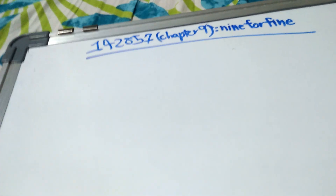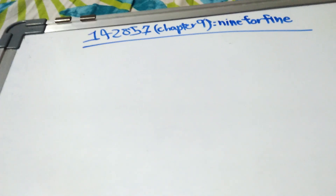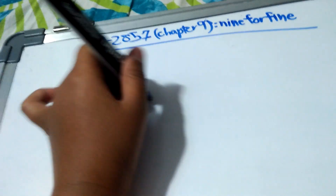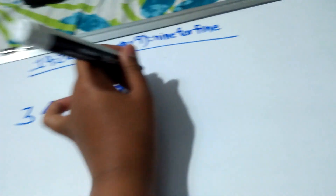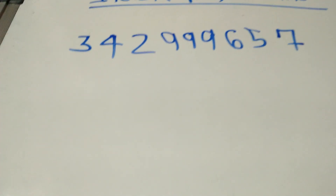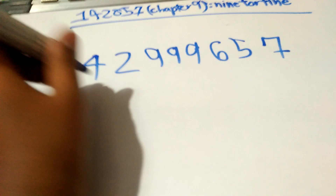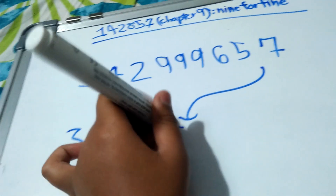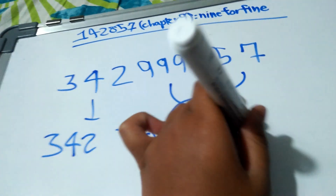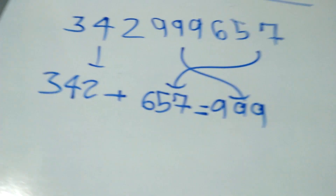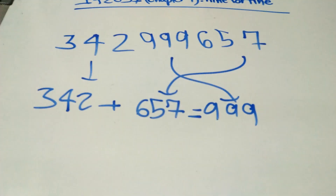Now, there is a multiple: 342,999,657. You can make a sum from this — take 342 and add 657, and together they become 999. This is what these sums are about.